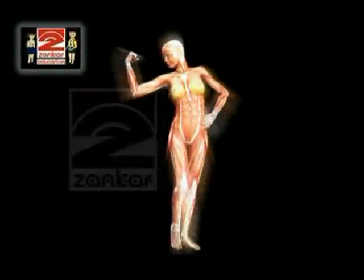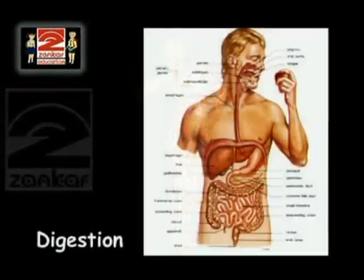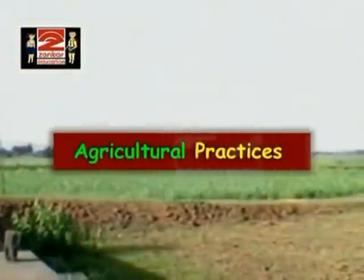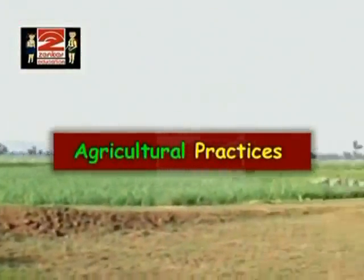You know that the energy from food is utilized by organisms for carrying out their various body functions such as digestion, respiration, and excretion. In order to provide food for a large population, regular production, proper management, and distribution of food is necessary. So, first we will see the agricultural practices.